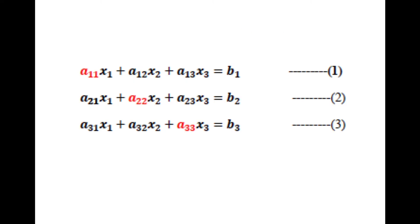For explaining, I consider a 3 by 3 system with three unknowns x1, x2, and x3. Solving this system means finding values of x1, x2, and x3 which satisfy all three given equations. Here a11, a22, and a33 are diagonal elements. If the system is diagonally dominant, a11 will be large compared to a12 and a13, a22 large compared to a21 and a23, and a33 large compared to a31 and a32.